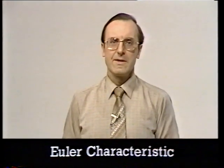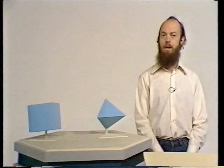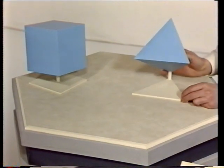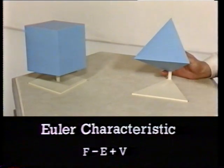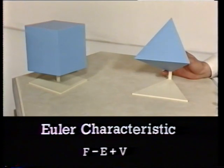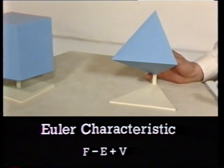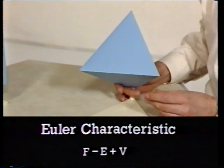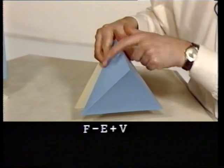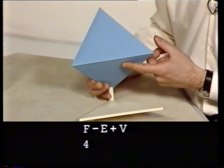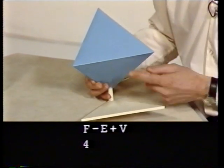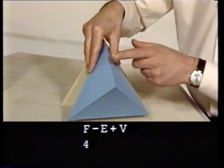The method effectively includes calculating a number for each surface called the Euler characteristic of the surface. To explain the Euler characteristic, it's easiest to look first at surfaces made up of flat faces — polyhedra, like this cube or this tetrahedron. The Euler characteristic is defined as the number of faces minus the number of edges plus the number of vertices. I'll take the tetrahedron as my example.